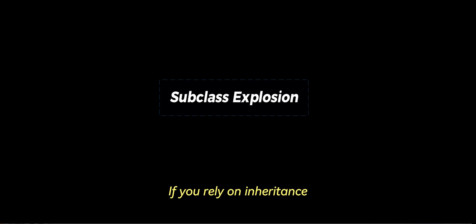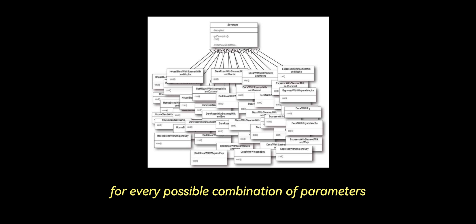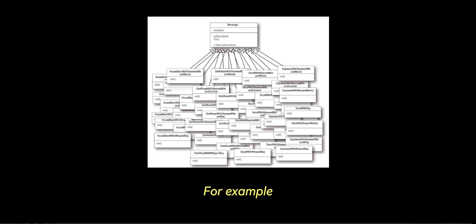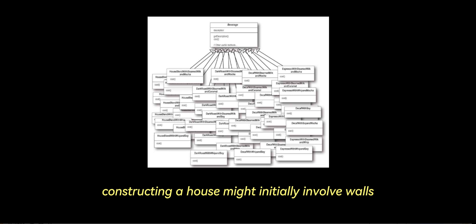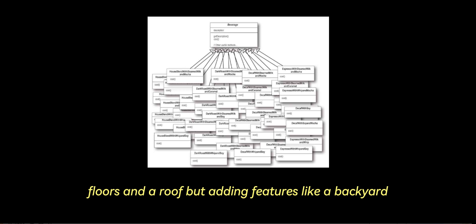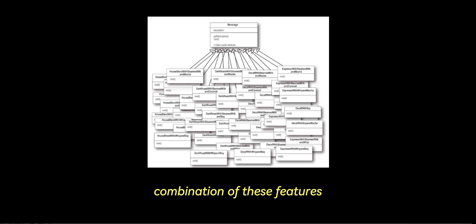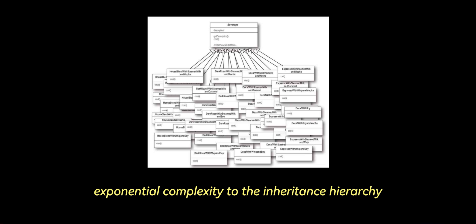Number two is subclass explosion. If you rely on inheritance to handle different configurations of an object, you'll need to create a subclass for every possible combination of parameters. This quickly leads to an explosion in the number of subclasses as you introduce new parameters or features. For example, constructing a house might initially involve walls, floors, and a roof, but adding features like a backyard, heating, or wiring would require creating multiple subclasses to account for every possible combination of these features.